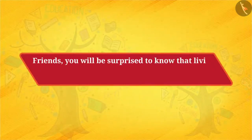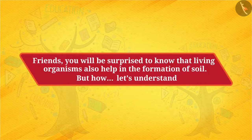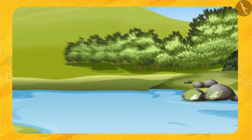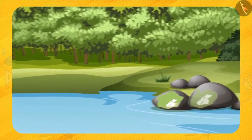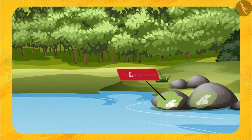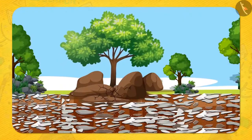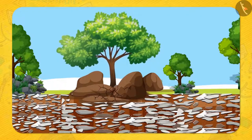Living organisms also help in the formation of soil. You must have seen a green sheet on the surface of stones — this is not a sheet, in fact it's a microorganism called lichen. It grows on the surface of the stone and secretes certain chemicals which powder the rock surface and form a thin layer of soil.